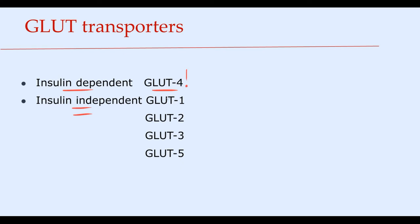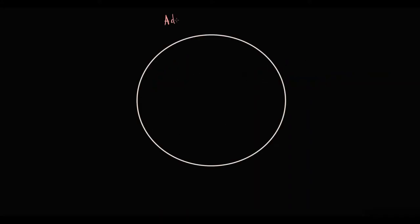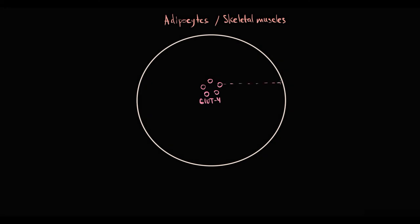The only insulin-dependent transporter is GLUT 4; all other GLUT transporters are insulin-independent. The reason GLUT 4 is called insulin-dependent is that a GLUT transporter is only active when it is present on the cell membrane, where it can transport glucose inside the cell. In adipocytes and skeletal muscles, GLUT 4 is sequestered and stored in vesicles in the cytoplasm, so initially GLUT 4 is inactive.